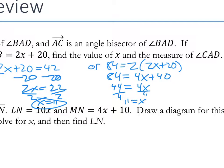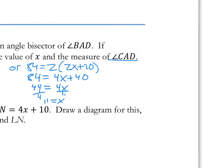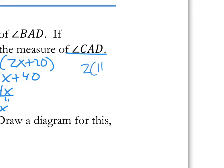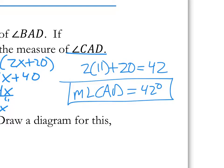Now we want to find the measure of angle CAD. Since AC is an angle bisector, CAD equals CAB. We plug in x = 11: 2 times 11 plus 20 gives us 22 plus 20, which is 42. So the measure of angle CAD is 42 degrees — which is just half of 84.